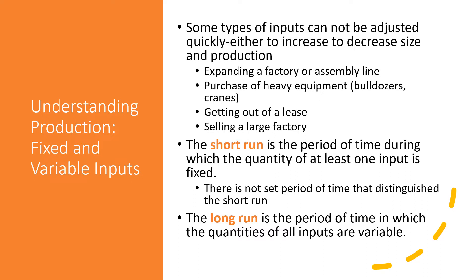The amount of some inputs can't be adjusted quickly. It takes a long time to expand factories and assembly lines. Consider a construction company that wants to expand its business — it can take several months of planning and negotiation before it can complete the purchase of heavy equipment like cranes and bulldozers. Over a period of several months or more, the construction company is stuck with a fixed quantity of equipment. Economists define the short run as the period during which at least one input is fixed.